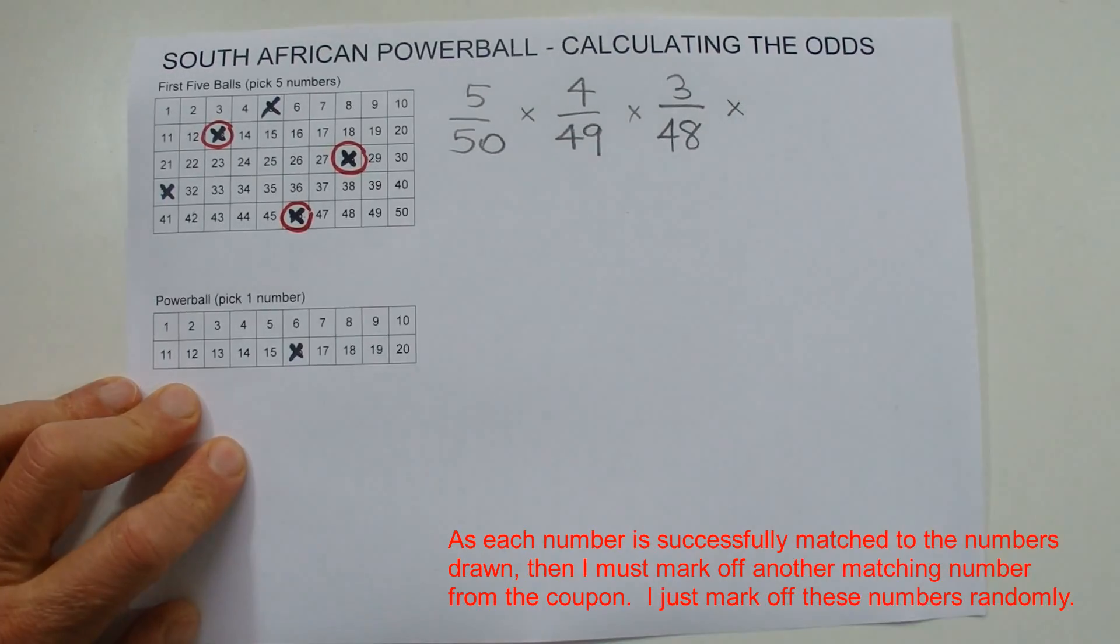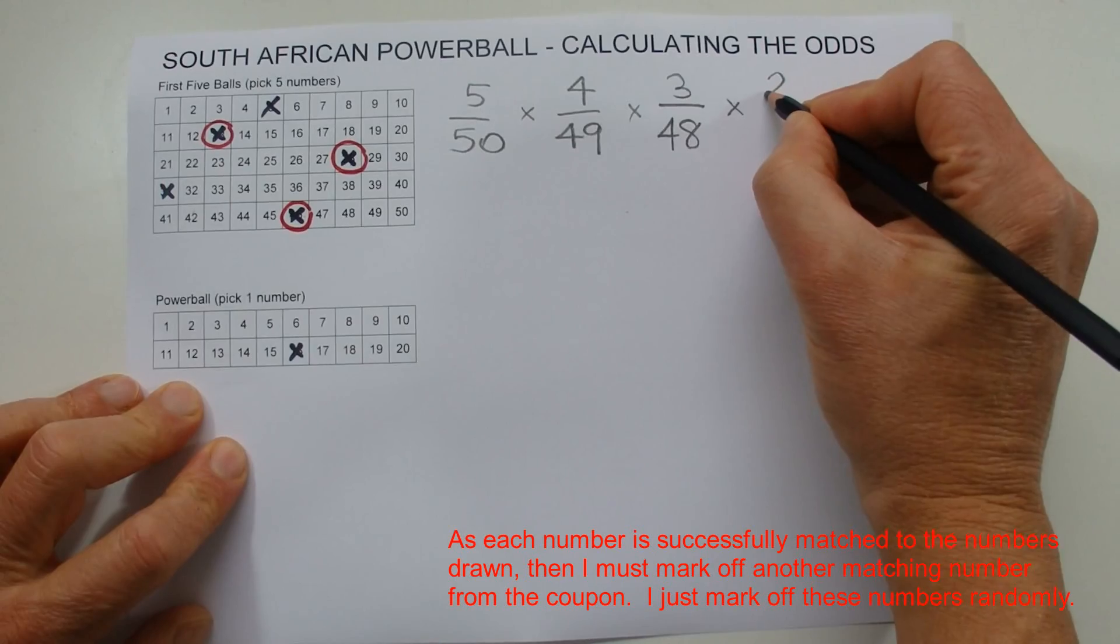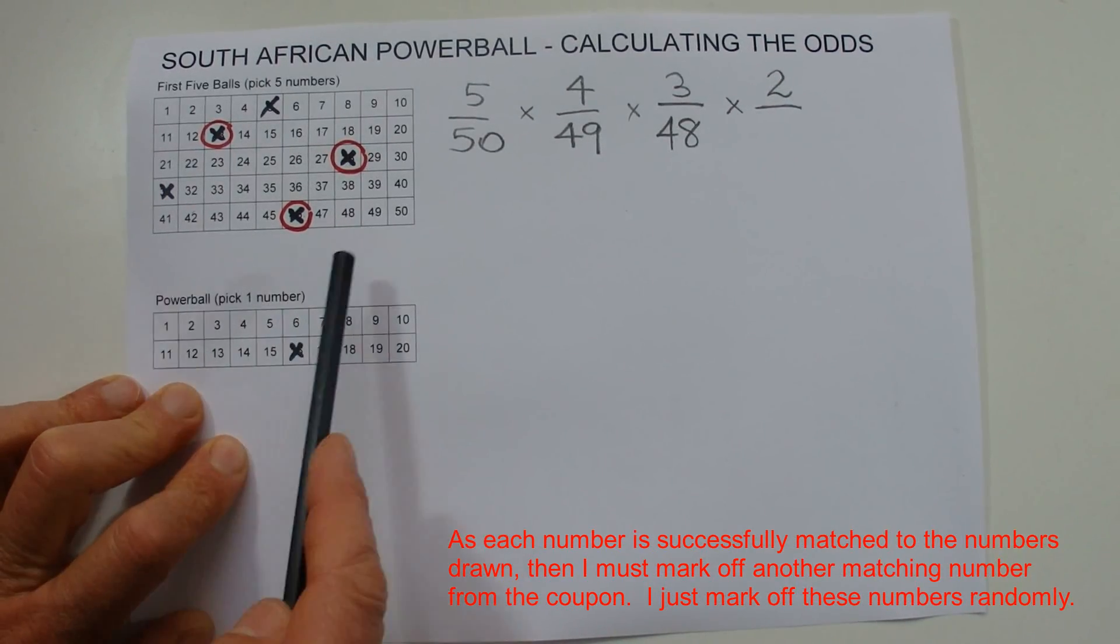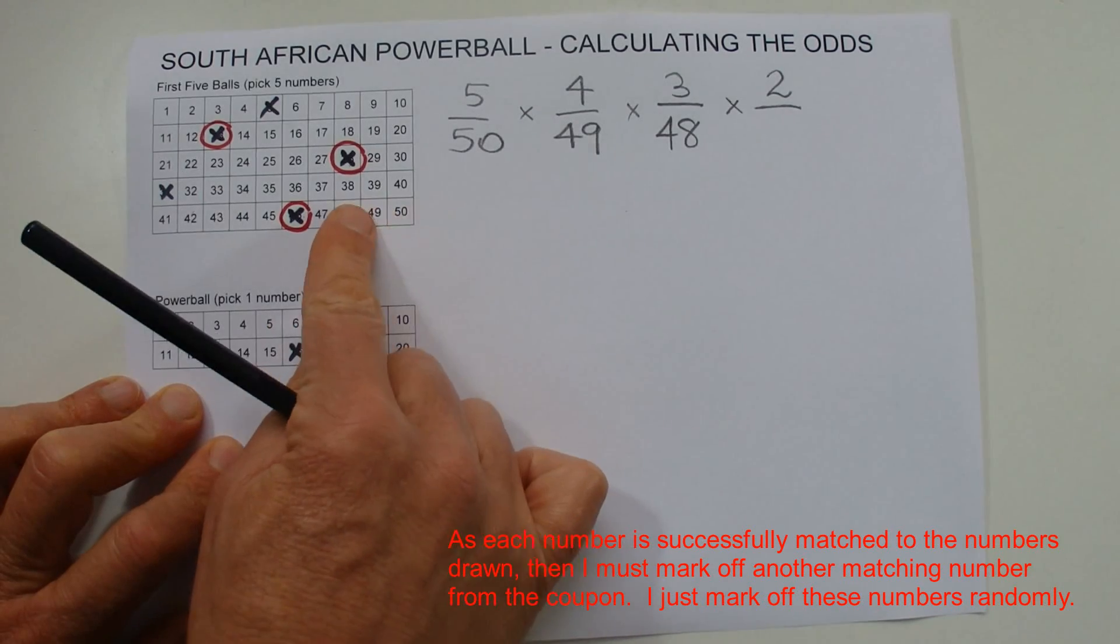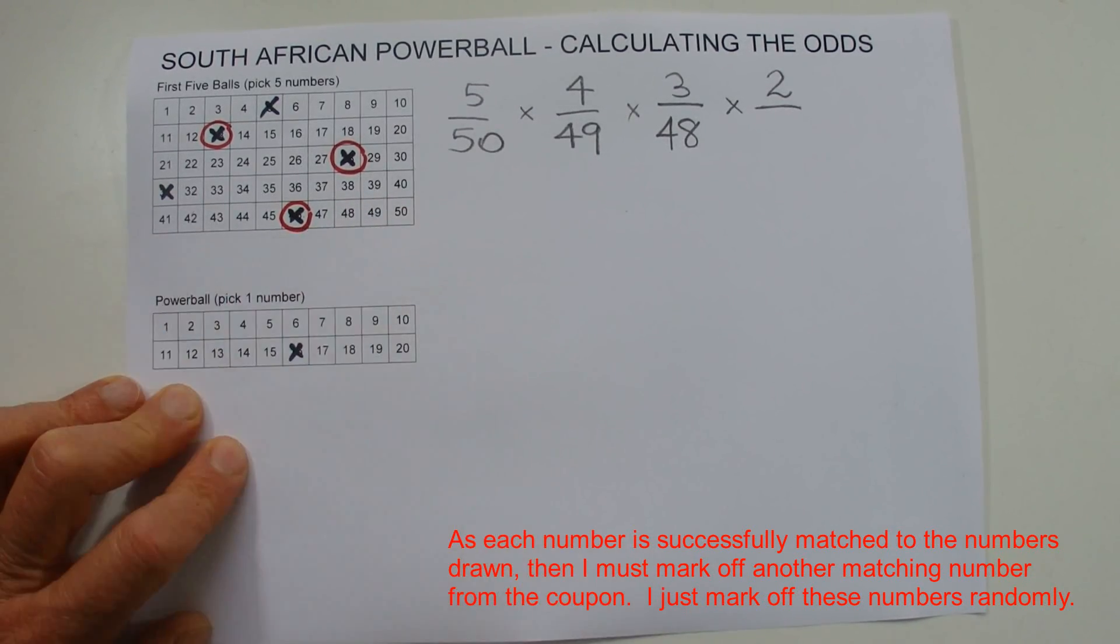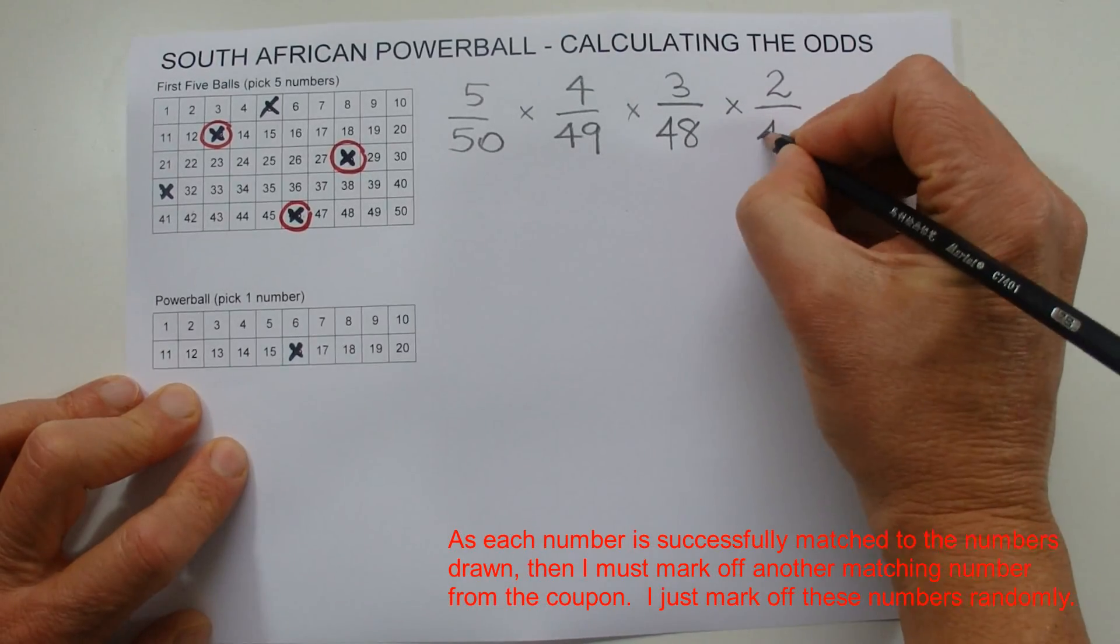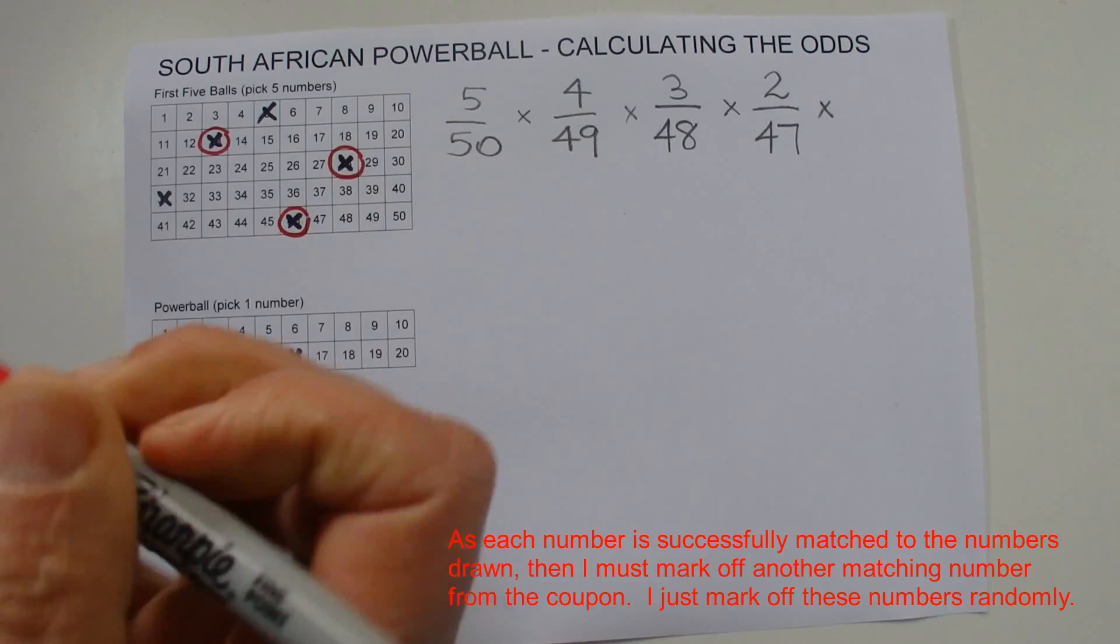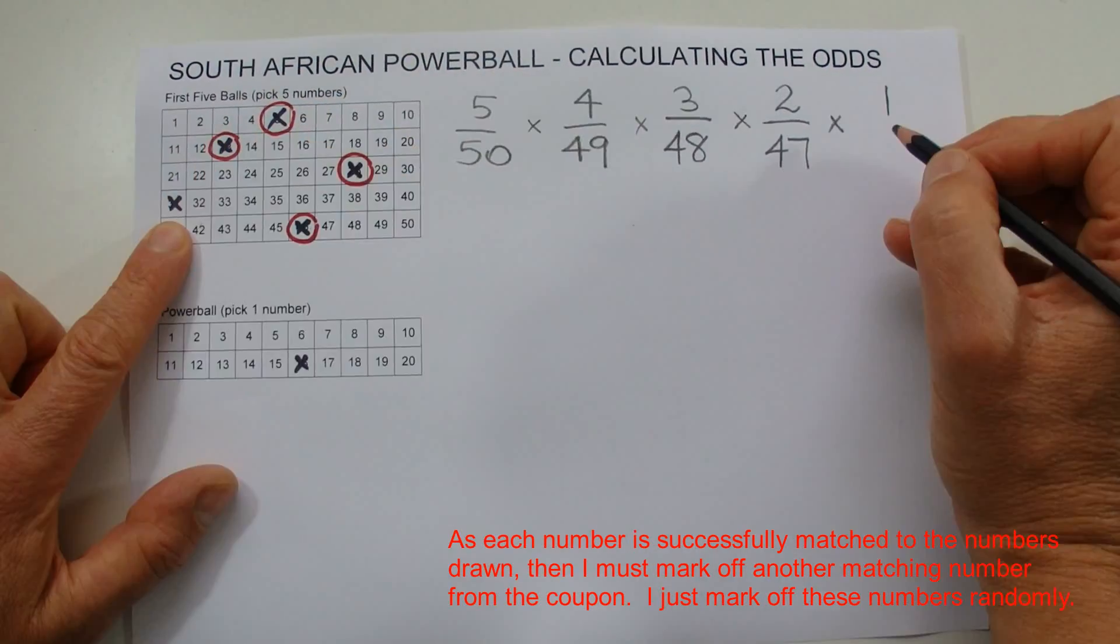And then the fourth number that's drawn, you're left with two chances. You've got two numbers left on your coupon that haven't been matched. And now three numbers have already been drawn out of the barrel. So you've got 47 numbers left in the barrel to match the fourth number that's drawn.